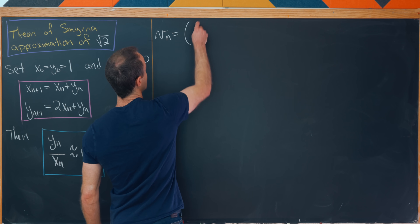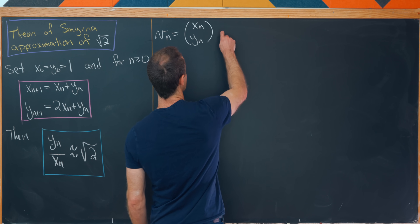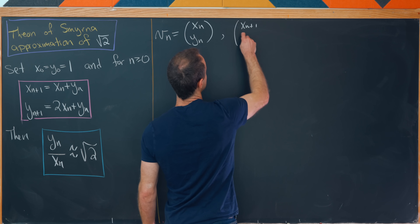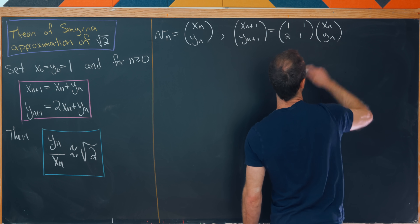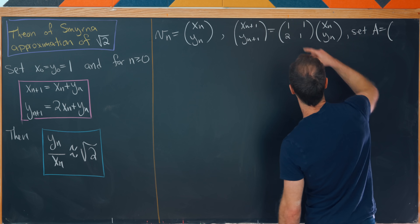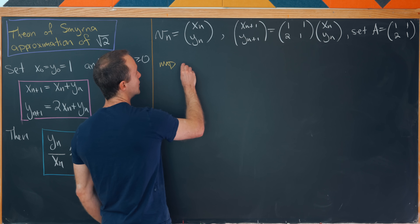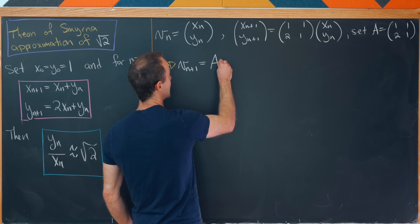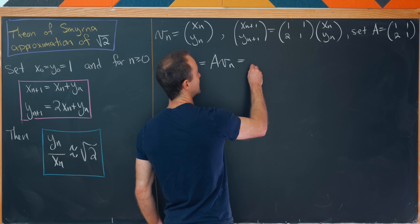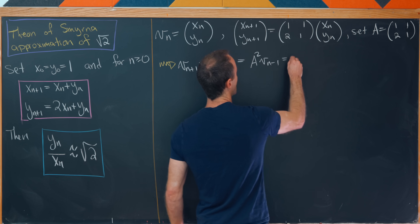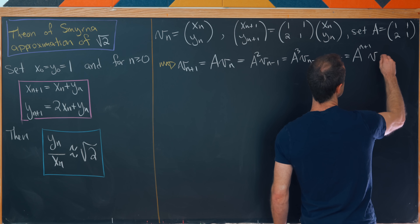Let's set a vector vₙ equal to the vector with components xₙ and yₙ. The recursion can be written in matrix-vector form as: xₙ₊₁, yₙ₊₁ equals the matrix [1, 1; 2, 1] times the vector xₙ, yₙ. If we call this matrix A, that's equivalent to the compact form vₙ₊₁ equals A times vₙ. We can take that all the way down, giving us vₙ₊₁ equals Aⁿ⁺¹ times v₀.